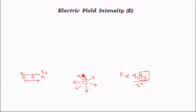Therefore, the electric field is defined as the influence of one particle on the particles which will come closer to it. All we need to do is remove the other charge particle, Q2, from the equation, and then we will get the electric field.